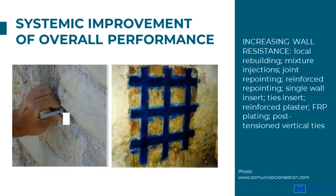Walls can be retrofitted by employing various techniques: local rebuilding, mixture injections, joint repointing, reinforced repointing, single wall insert, ties insert, reinforced plaster, FRP plating, and post-tensioned vertical ties.